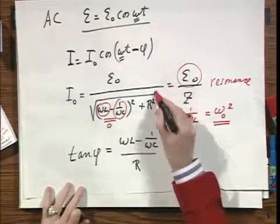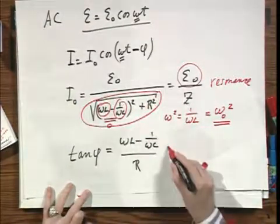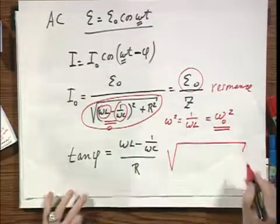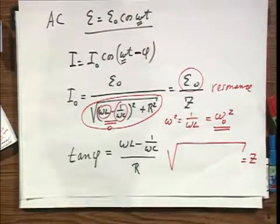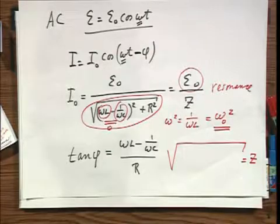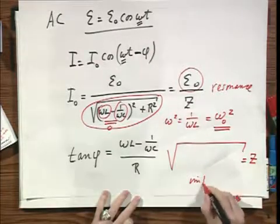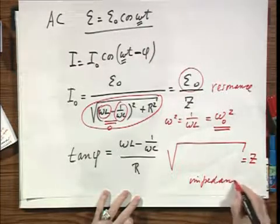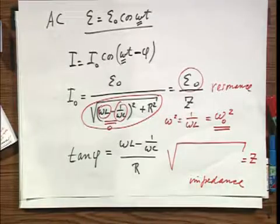And we call this entire square root Z, and that is called the impedance. Just words, but it's useful to remember them.